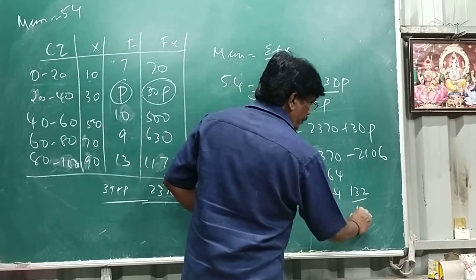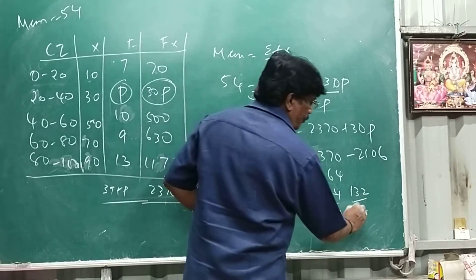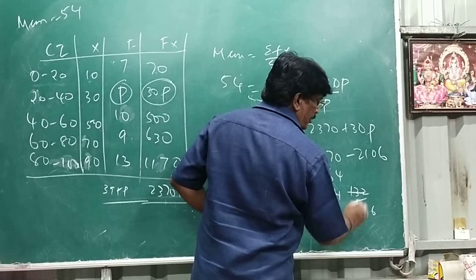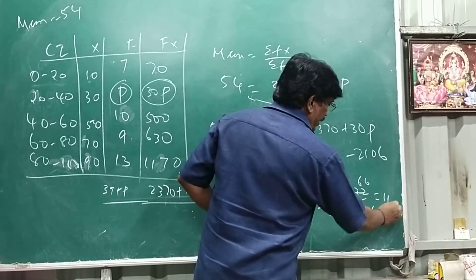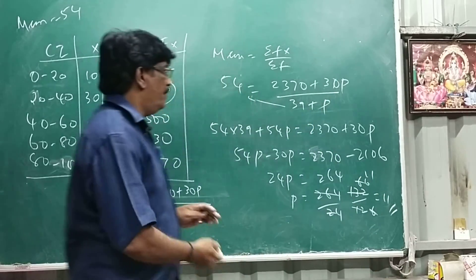132, this is 12. Again 2 table, this is 6, this is 66, so 11 times answer 6 and this cancel, so p equal to 11.